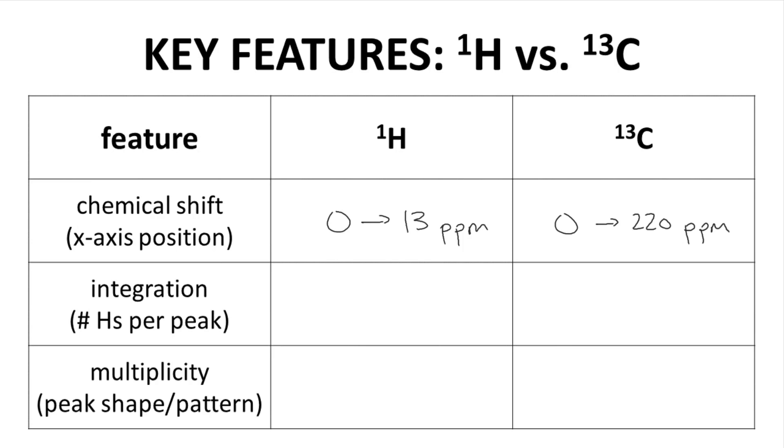Next up is integration. In a proton spectrum, integration is very useful as the intensity of the peak – the area under the NMR peak – is proportional to the number of hydrogens that are causing that signal at that chemical shift. So, in a proton spectrum, a bigger signal indicates more hydrogens and a smaller signal indicates fewer hydrogens. In other words, yes, integration is a useful idea in a proton spectrum.